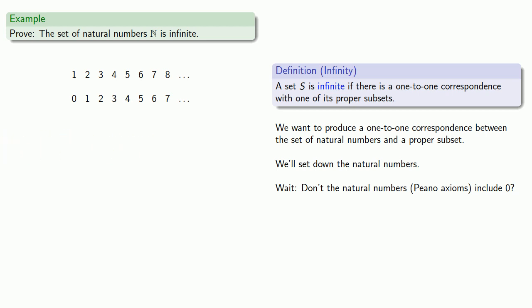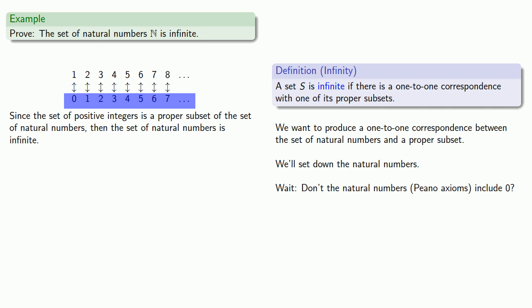And we see here that we can find a one-to-one correspondence between the numbers in the top row and the numbers in the bottom row. And since the set of positive integers is a proper subset of the set of natural numbers, then the set of natural numbers is infinite, because there's a one-to-one correspondence between the set of natural numbers and a proper subset.